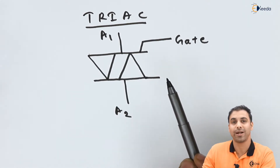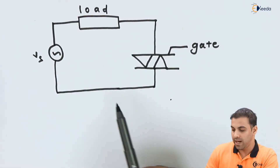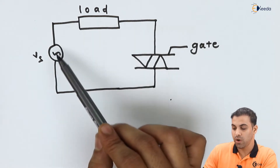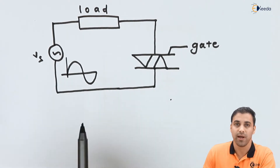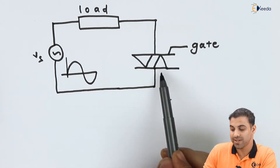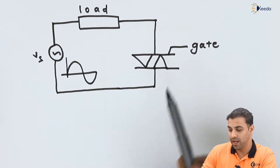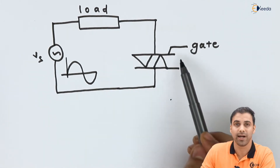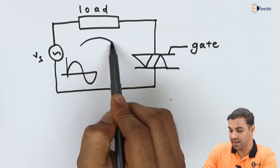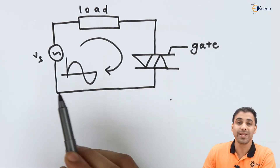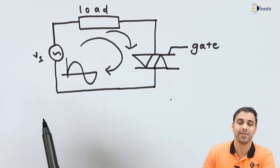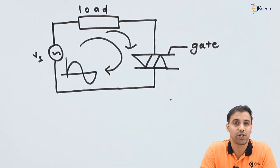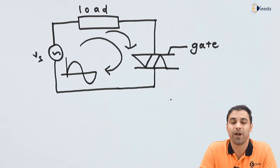Now let's talk about how it really works in an electrical circuit. Here I have connected a TRIAC with a load to an AC sinusoidal voltage source. During the positive half cycle, one of the thyristors is forward biased, and if at that point an external gate pulse is applied — in other words, the gate is triggered — it will start conducting in that direction. During the negative half cycle, the other thyristor will start conducting again, provided the gate-triggering pulse is present. But if you remove the gate-triggering pulse, the TRIAC will still continue conducting.